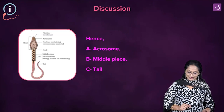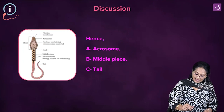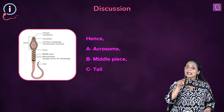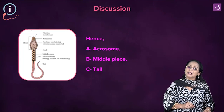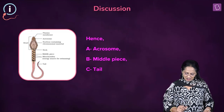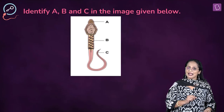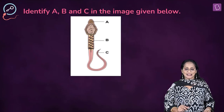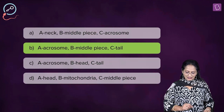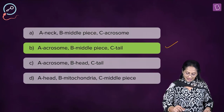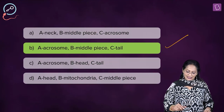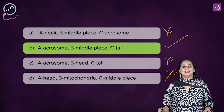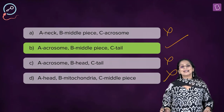Looking at the image: A is the acrosome which contains enzymes, B is the middle piece, and C is the tail. So A is acrosome, B is middle piece, C is tail. The right option is B. You can eliminate A, C, and D.